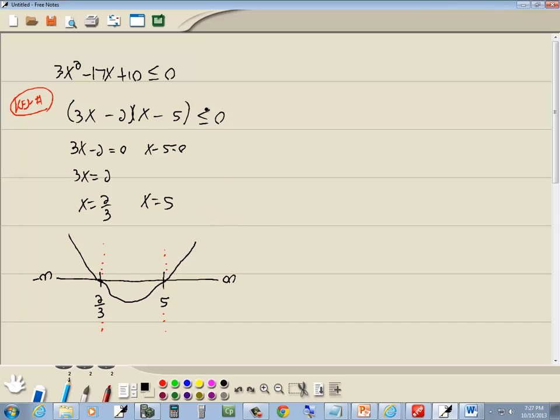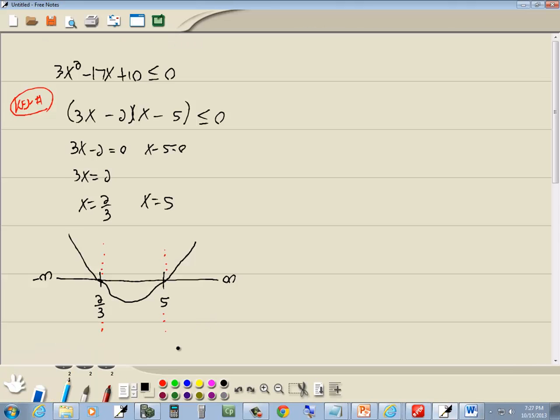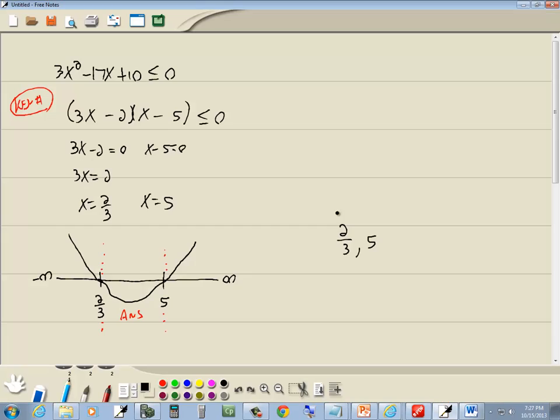Okay, for this problem, we've got less than or equal to. Less than or equal to, your answer is below the x-axis. So, this interval here is our answer. It goes from 2 thirds to 5. So, we've got 2 thirds, comma 5. Now, we've got less than or equal to. Less than or equal to tells us we're going to use brackets. So, we'll put brackets around the 2 thirds and the 5. And that's our answer.